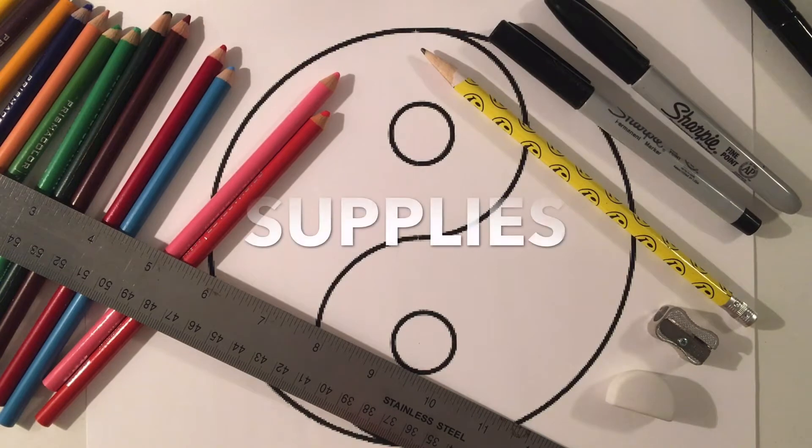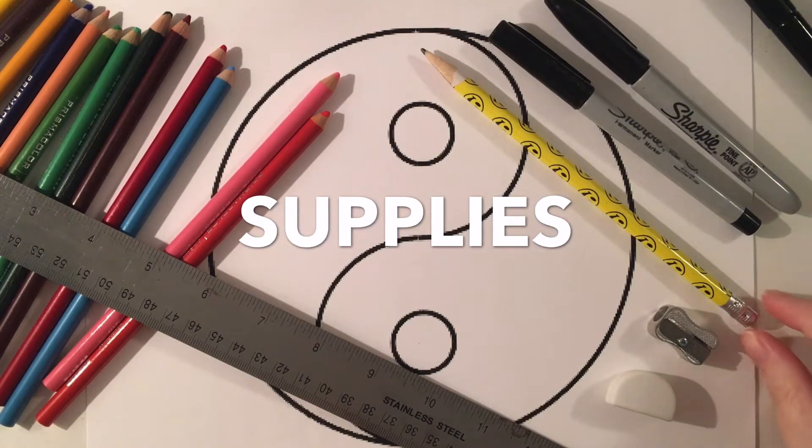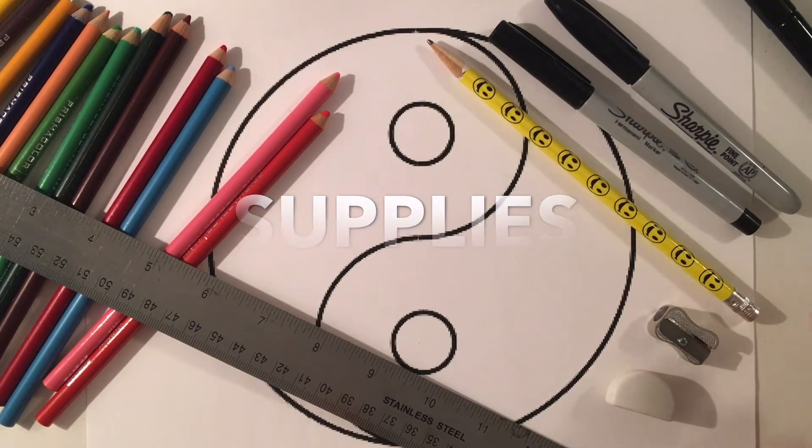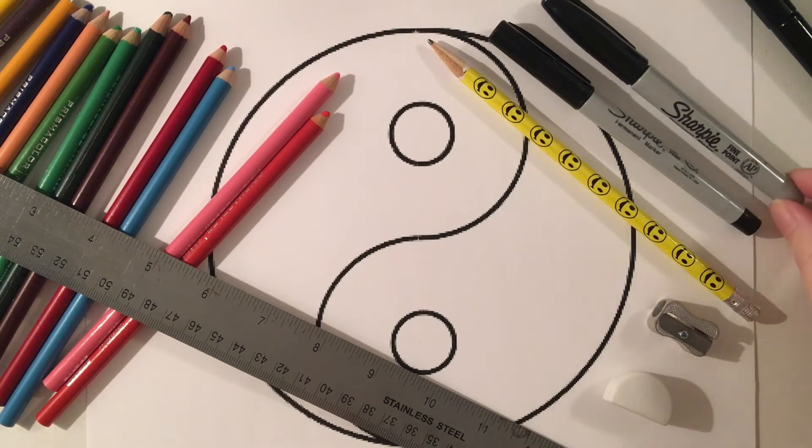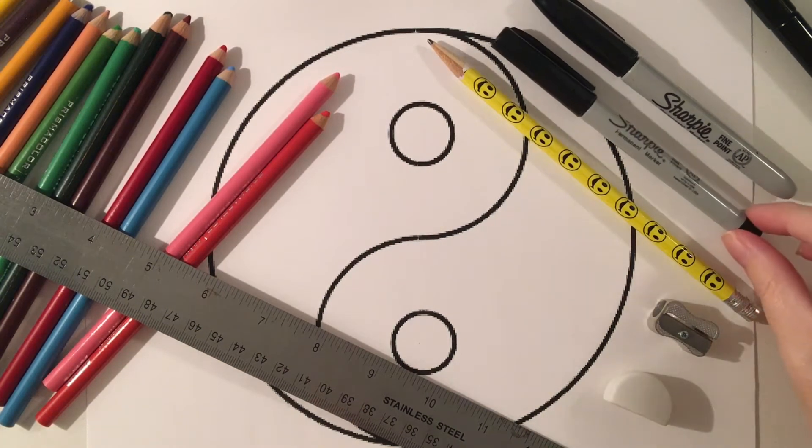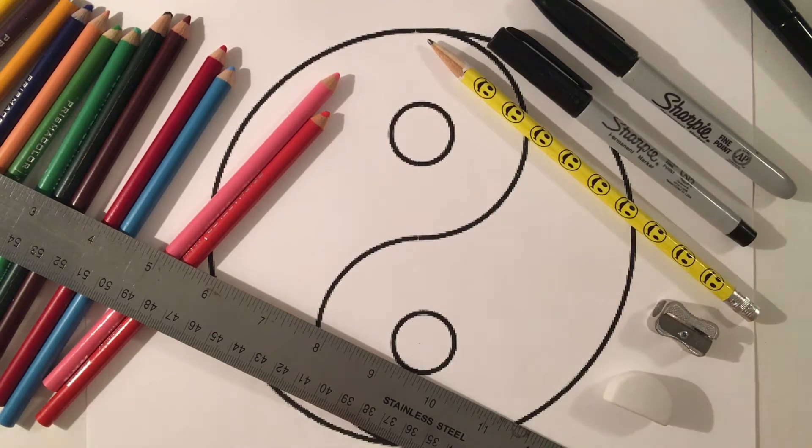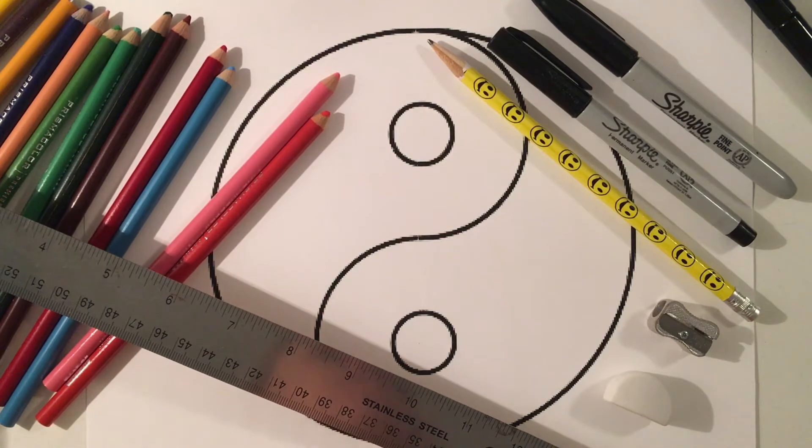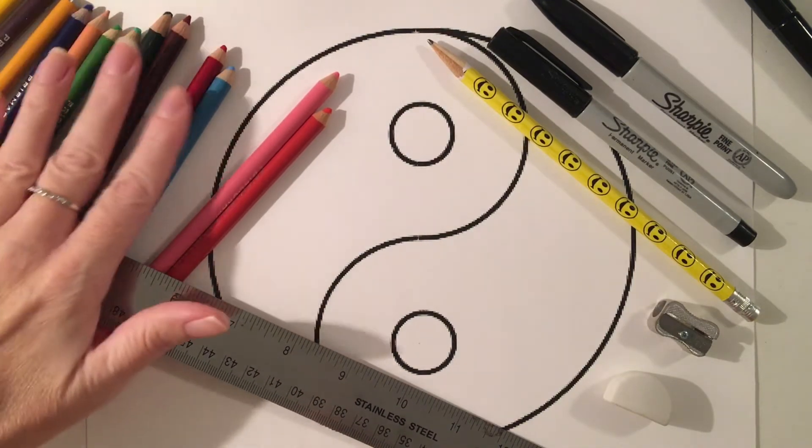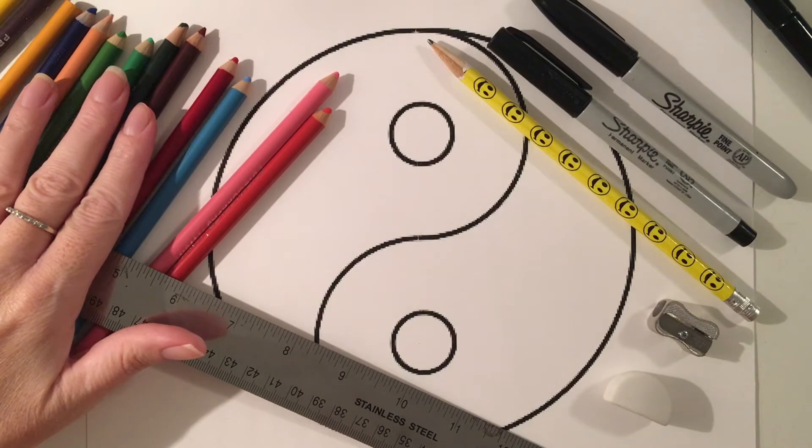The supplies that you're going to use for this project are your regular pencil, pencil sharpener, eraser, fine point sharpie, ultra fine point sharpie. You'll also use a ruler for any of your patterns that you want to have straight lines and then you'll also be using your colored pencils.